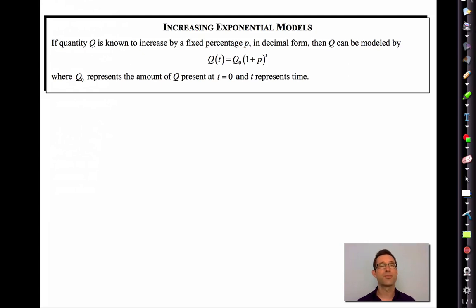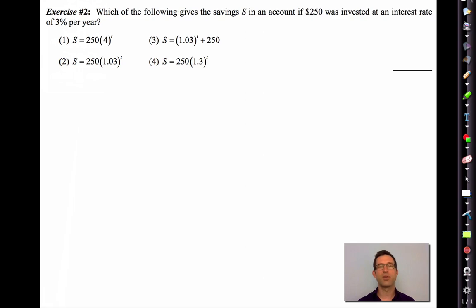Increasing exponential models. If quantity Q is known to increase by a fixed percentage P in decimal form, that's key. Decimal form. Then Q can be modeled as Q sub zero times one plus P to the T. Where Q sub zero represents the amount of Q present at T equals zero and T represents time. Lots of underlining there. So I'm going to get rid of that.